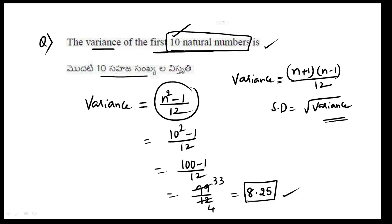n² - 1 by 12. So, using this trick, in the exam you can easily get 1 mark. Wherever needed, use this variance formula: n² - 1 by 12, when consecutive natural numbers are given. Thank you.